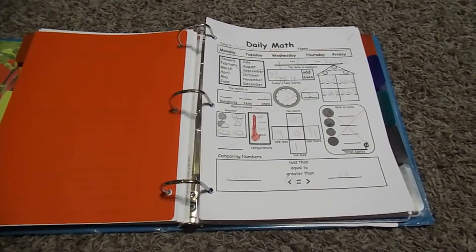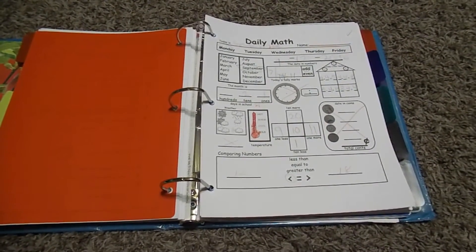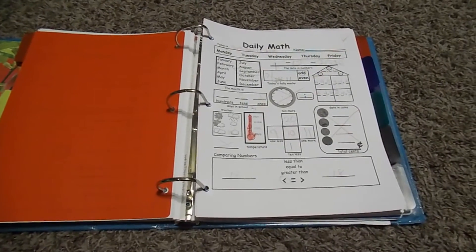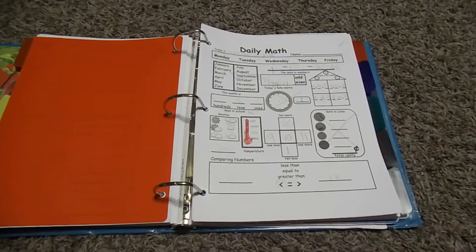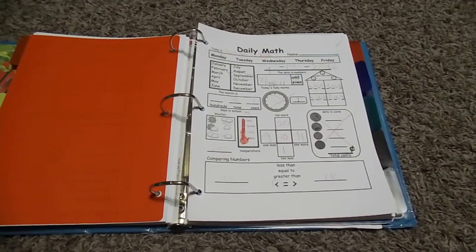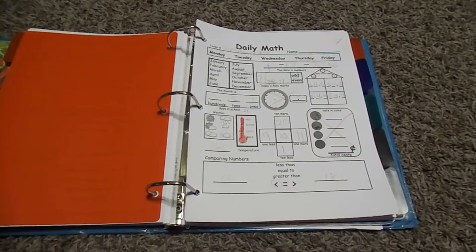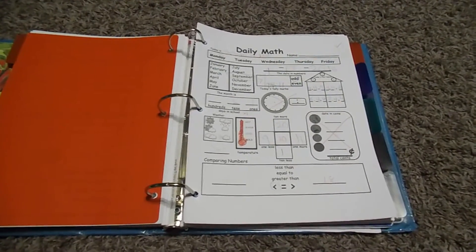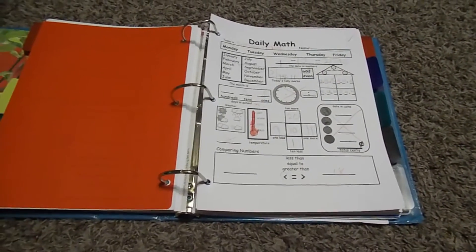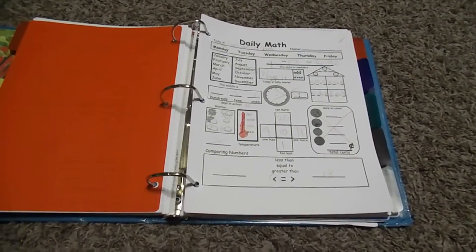So in addition to Math Mammoth, which is our main curriculum, I use several other resources to enrich our curriculum. And the first thing that I do is a daily math review. And some people call it daily math meeting, daily math calendar. I typically call it a daily math review, but it's basically all the same. It's reviewing basic math concepts for the grade level that you're in. That's pretty much how I understand it. And that's basically what we do.